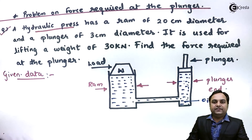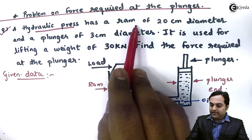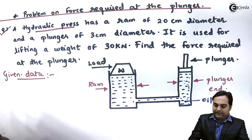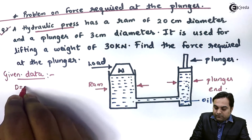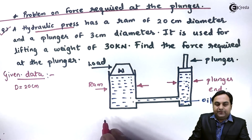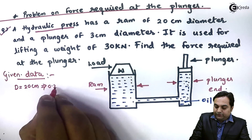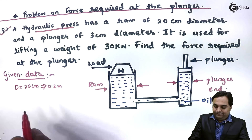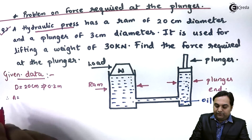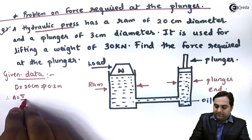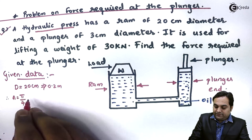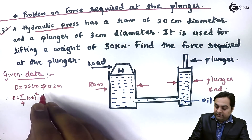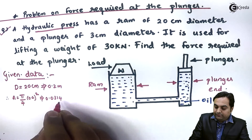Now I will write the given data. The diameter of the RAM is capital D = 20 centimeter = 0.2 meter. The area of RAM is therefore capital A = π/4 × D² = π/4 × (0.2)² = 0.0314 meter square.